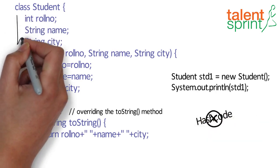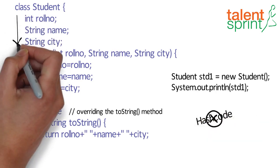So in general, it's a good practice to override the toString() method to display the values of an object, as it saves us time and energy on writing multiple lines of code to do the same.